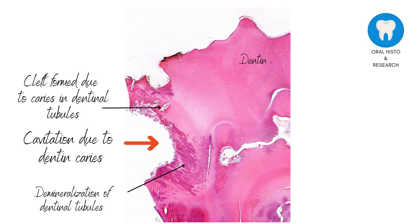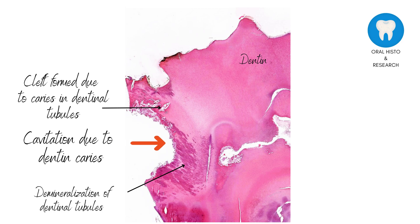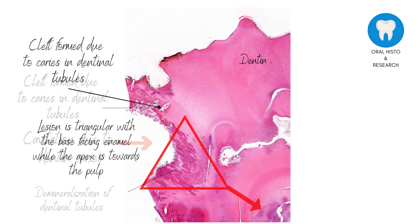Histologically, dentin caries are characterized by the loss of minerals from the dentin and the destruction of dentinal tubules. In the early stages of dentin caries, the dentin appears softened and discolored, while in more advanced stages like this image, the dentin may become extensively degraded, leading to the formation of a cavity.